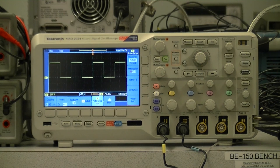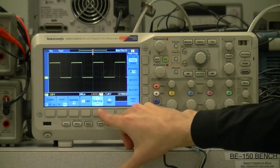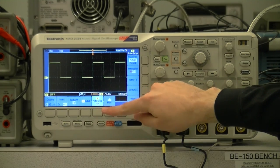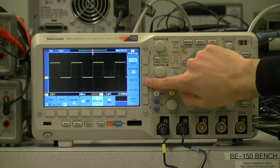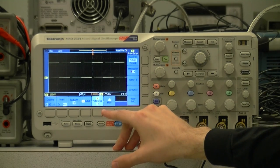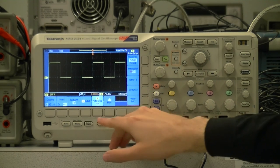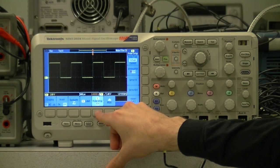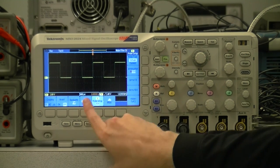For example, this probe is currently set to 10x, and the oscilloscope thinks so too. If we bring up the menu by pressing this button and have the oscilloscope set to 1x, it now has a wrong idea of what the signal is. We have to set it to 10x for it to understand the signal properly. Always check this before making any measurements.